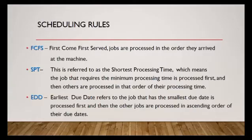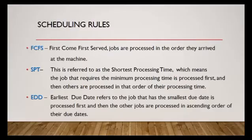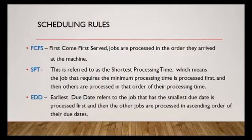Then we have the SPT, which is referred to as the shortest processing time. This means the job that requires the minimum processing time is processed first. If you are given the instruction to use the SPT, the one that has the shortest processing time is considered first, followed by the next shortest, and so on. The EDD is the earliest due date, which refers to the job that has the smallest due date — that job is processed first, and then others follow along.